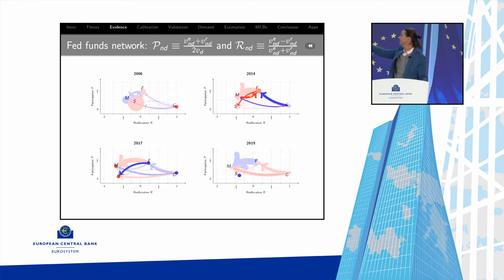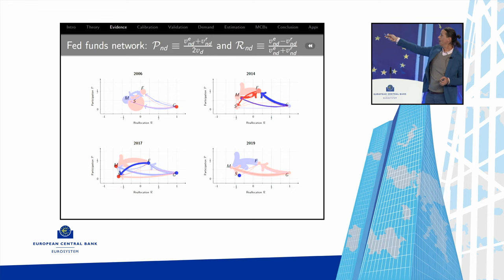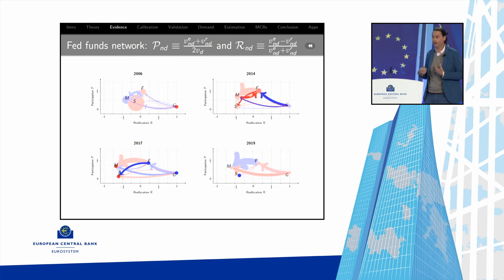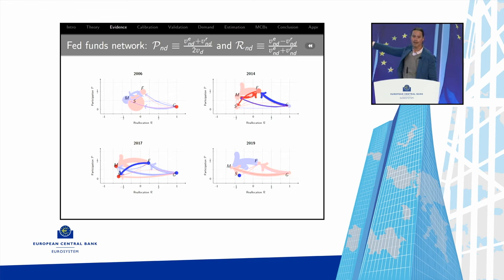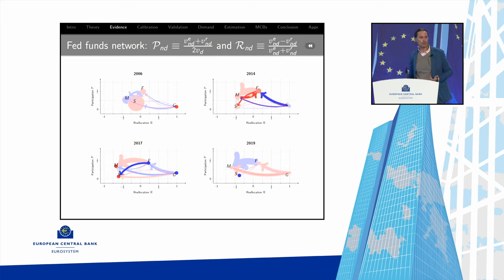Another key statistic is the reallocation rate: take a bank's extended Fed funds, net out received funds, and divide by gross daily trade. If zero, the bank is a market maker — trading a lot but with net position of zero. If plus one, it's a pure lender; if minus one, a pure borrower. Plotting participation rate versus reallocation rate reveals market structure: GSEs participate significantly and are always lending; fast banks are near zero on reallocation — they're the market makers. This is consistent with stories that GSEs mostly lend to foreign banks in an institutional arbitrage pattern.